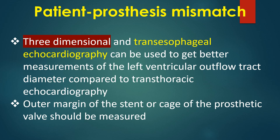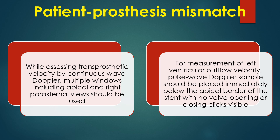Three-dimensional and transesophageal echocardiography can be used to get better measurements of the LVOT diameter compared to transthoracic echocardiography. The outer margin of the stent or cage of the prosthetic valve should be measured. While assessing transprosthetic velocity by continuous wave Doppler, multiple windows including apical and right parasternal views should be used. For measurement of left ventricular outflow velocity, pulse wave Doppler sample should be placed immediately below the apical border of the stent with no valve opening or closing clicks visible.